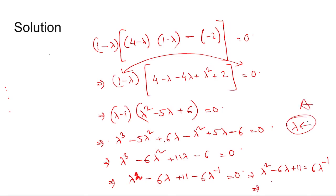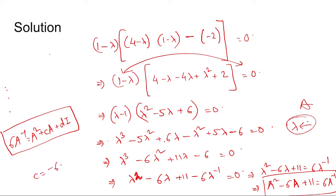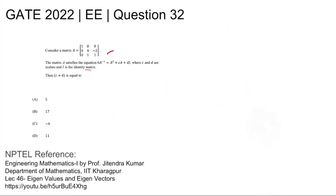Now since lambda is eigenvalue of matrix A, then we can write A square minus 6A plus 11 equal to 6A inverse. Also it is given in the question 6A inverse equal to A square plus cA plus dI where I is the identity matrix. Now if we compare these two we find c is minus 6 and d is 11, so c plus d is 5. So this is the answer, so option A is the correct answer. Thank you.